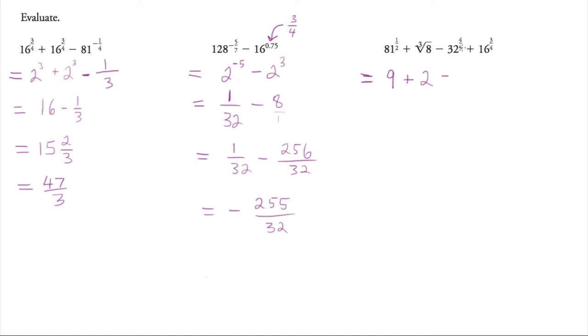We've got 32 here to the 4 fifths. And if you recall, the fifth root of 32 is 2 again. So that's 2 to the power of 4 here. And we've got 16 to the 3 quarters, which we've seen before. And that's 2 to the 3, or 8. And so this is 9 plus 2, which we could, if we wanted to, we could actually do that. Take away 2 to the 4 is 16, plus 2 to the 3 is 8.